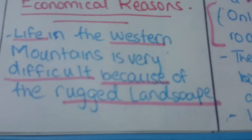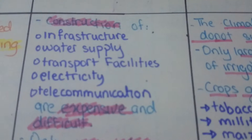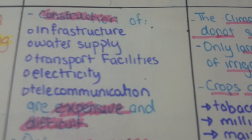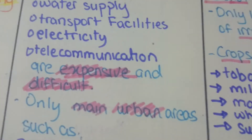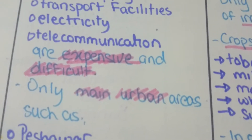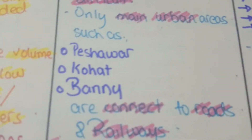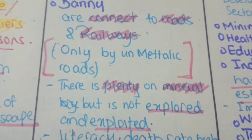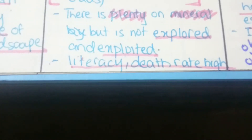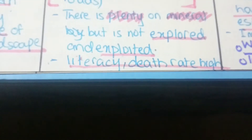Life in the Western Mountains is very difficult because of the rugged landscape. Construction of infrastructure, water supply, transport facilities, electricity, and telecommunication are very expensive and difficult. The main urban areas are Peshawar, Kohat, and Bannu, which are connected by non-metallic roads not very useful for trade.